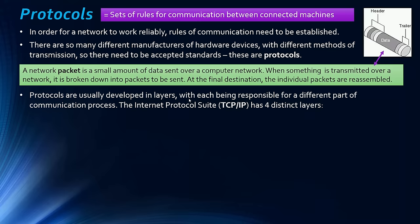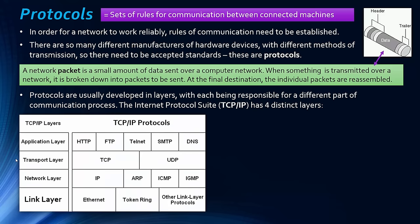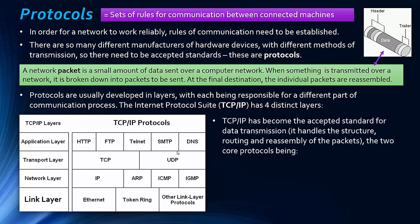Protocols are often expressed in terms of layers, based on a model called the OSI model, where each layer is responsible for a different part of the communication process. The internet uses a suite — a group of protocols — called the Internet Protocol Suite, most commonly referred to as TCP/IP. This suite handles the structure, routing, and reassembly of packets, and has become the accepted standard for data transmission as the internet has grown so crucial.